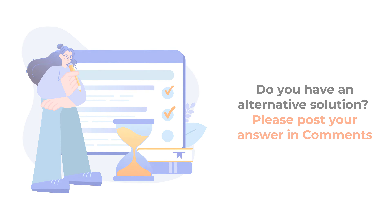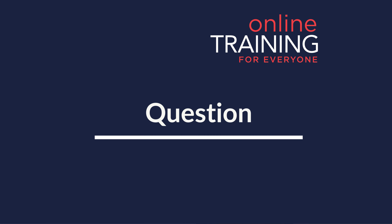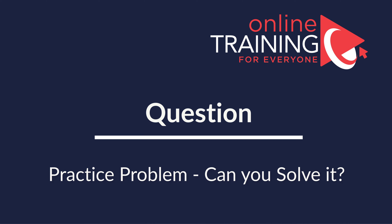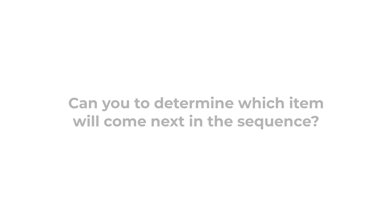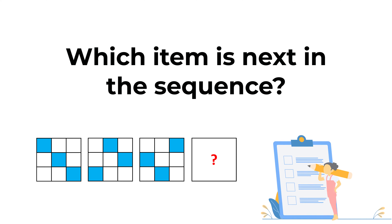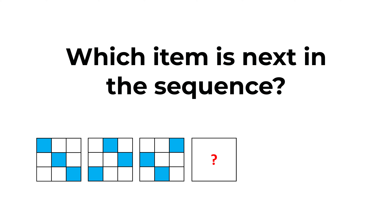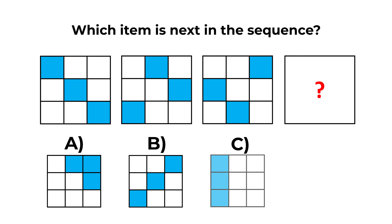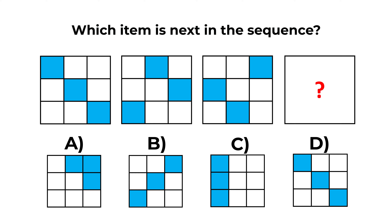Here's a practice question: determine which item comes next in the sequence. You're presented with three large squares, each containing nine small squares of different colors. The fourth square is missing. Choose from options A, B, C, and D. Post your solution and rationale in the comments for feedback.